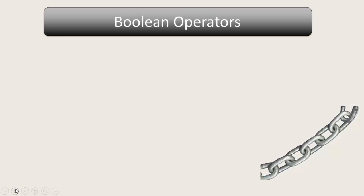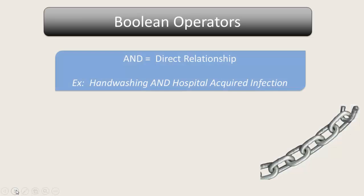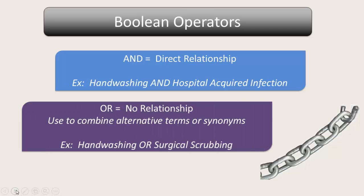In review, Boolean operators are terms that you use to make relationships between different concepts. AND makes a direct relationship, such as combining hand washing and hospital-acquired infections, and will return articles in which these two terms are described in relation to each other. OR gives you articles in which the two terms have no relationship to one another — it's mainly used to cast a broad net and combine alternative terms or synonyms, which are later ANDed together with other concepts to find useful articles.